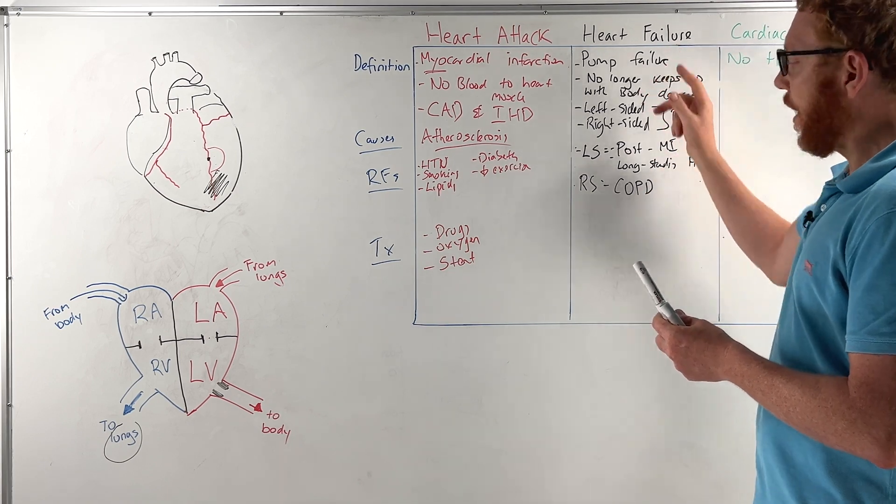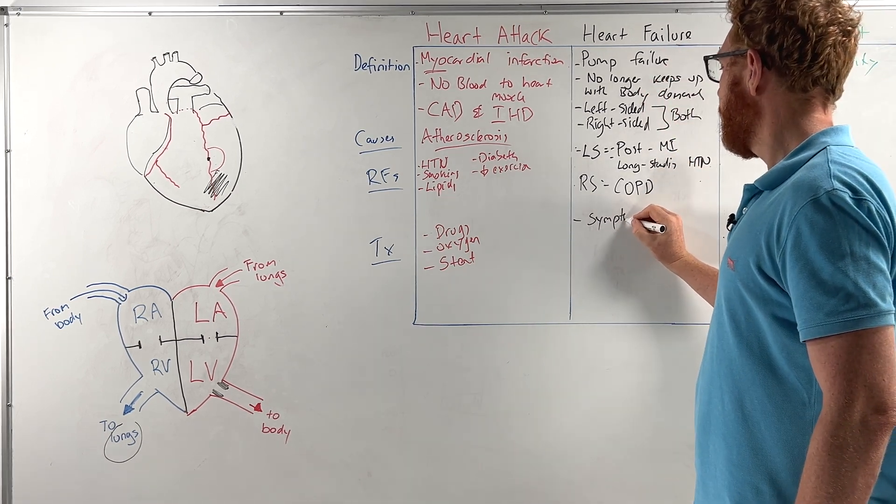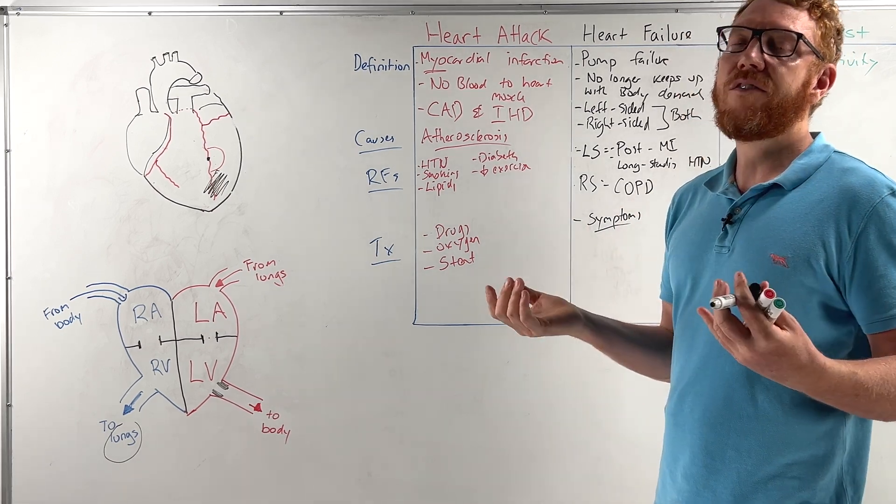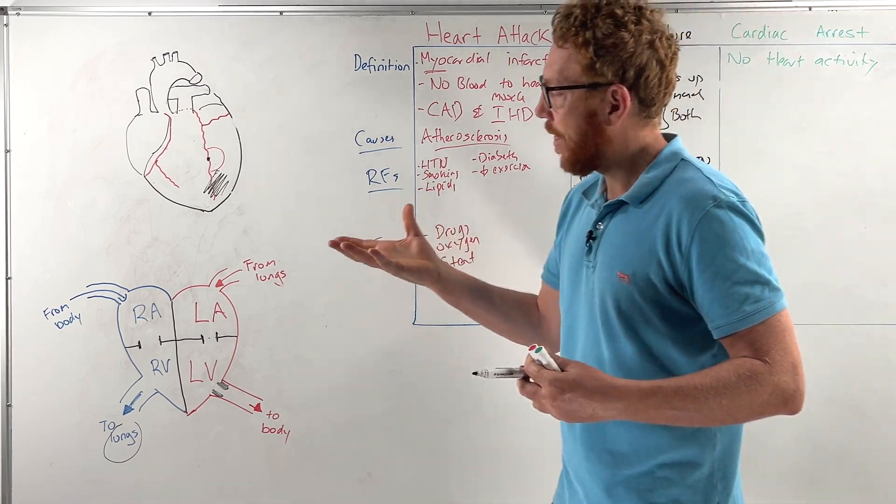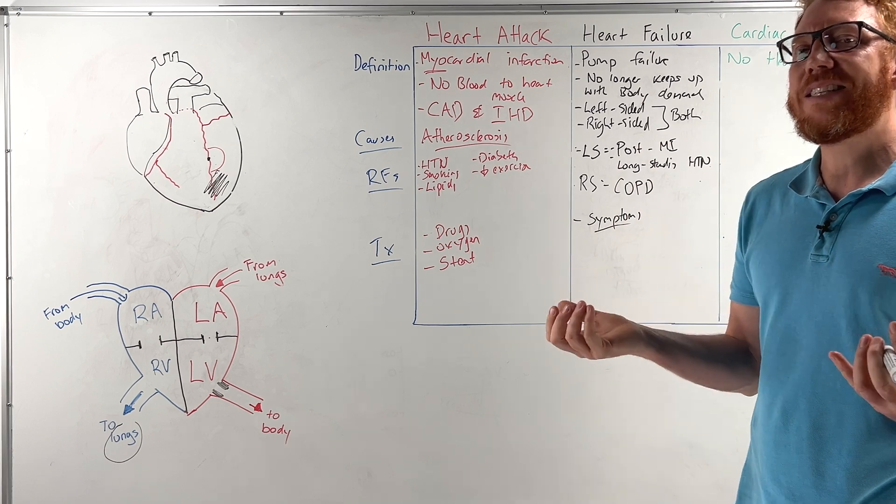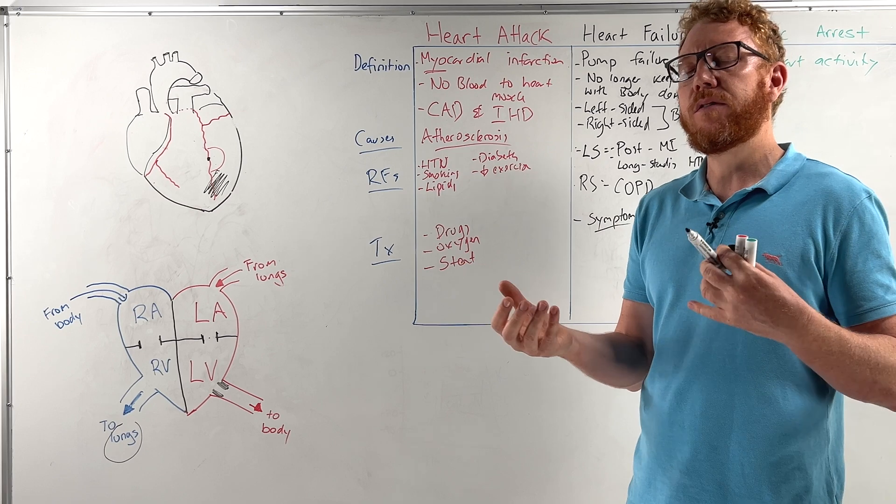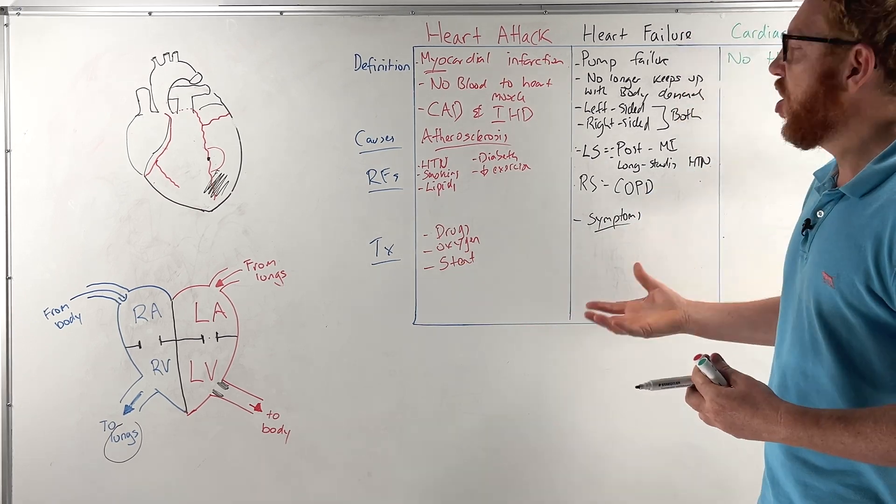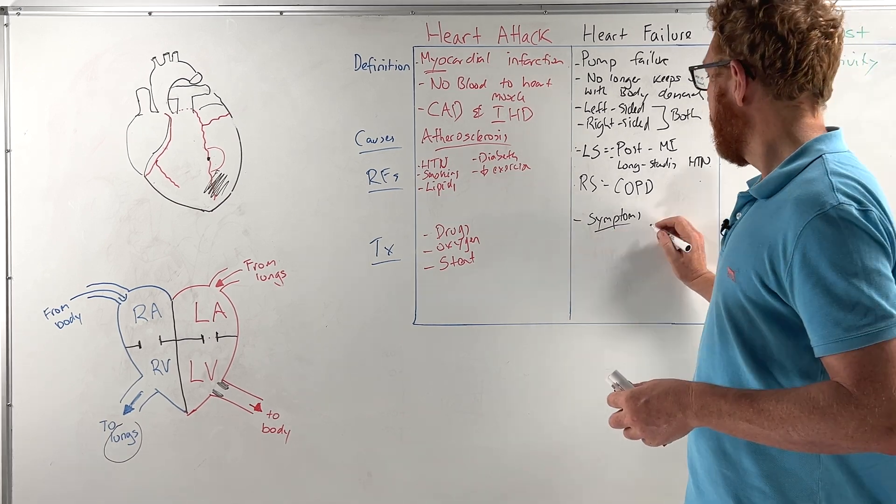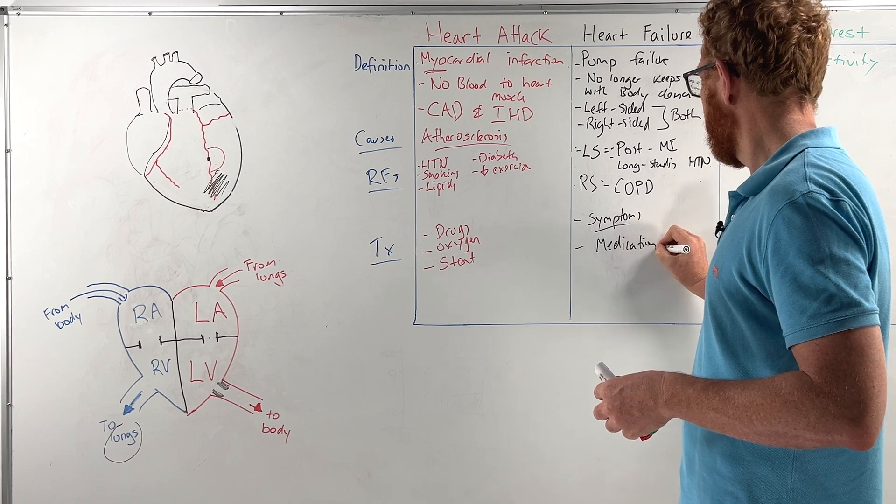The treatment associated with heart failure is to symptom manage. So the symptoms that I spoke about, like the fluid in the lungs, the fluid in the legs, you might give diuretics for. You want to make the heart more efficient, so you want to make it work less hard. You might give certain drugs to make the heart more efficient, like beta blockers or digoxin. And you just want to support the heart itself, so you want to do lifestyle changes. These can be medications and lifestyle.